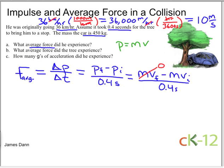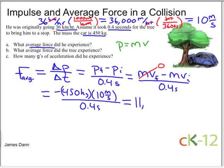Plugging in for the mass and initial velocity, I have 450 kilograms times 10 meters per second, all divided by 0.4 seconds. If I multiply this out, I get 4,500 divided by 0.4, and that equals 11,250 newtons.